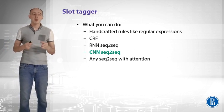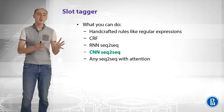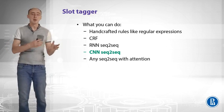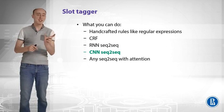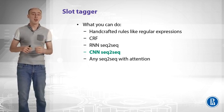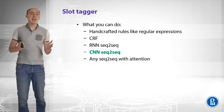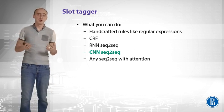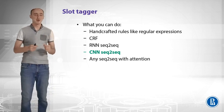Then there comes the slot tagger, and this is a bit more difficult task. You can use handcrafted rules like regular expressions — for example, when I say 'take me to Starbucks,' you know that if something comes after the phrase 'take me to,' that is most likely a destination slot. But that approach doesn't scale because natural language has a huge variation in how we can express the same thing. So it makes sense to do something data-driven here.